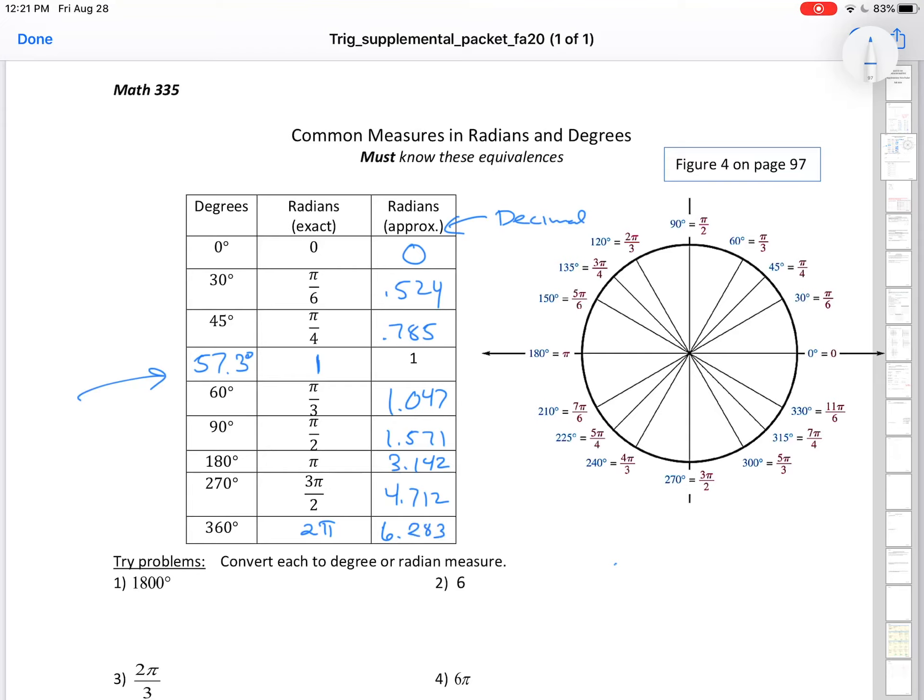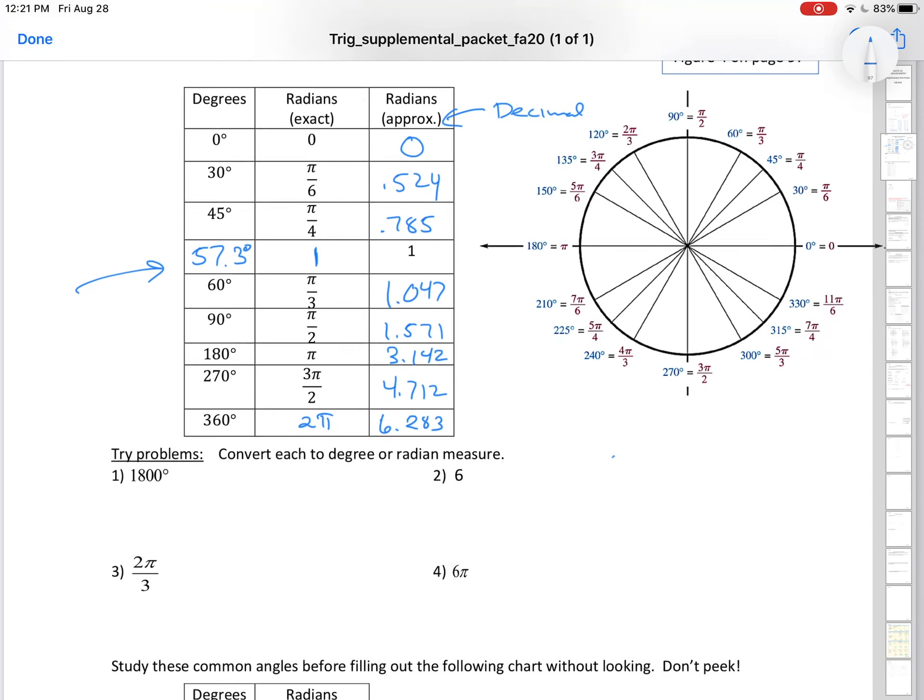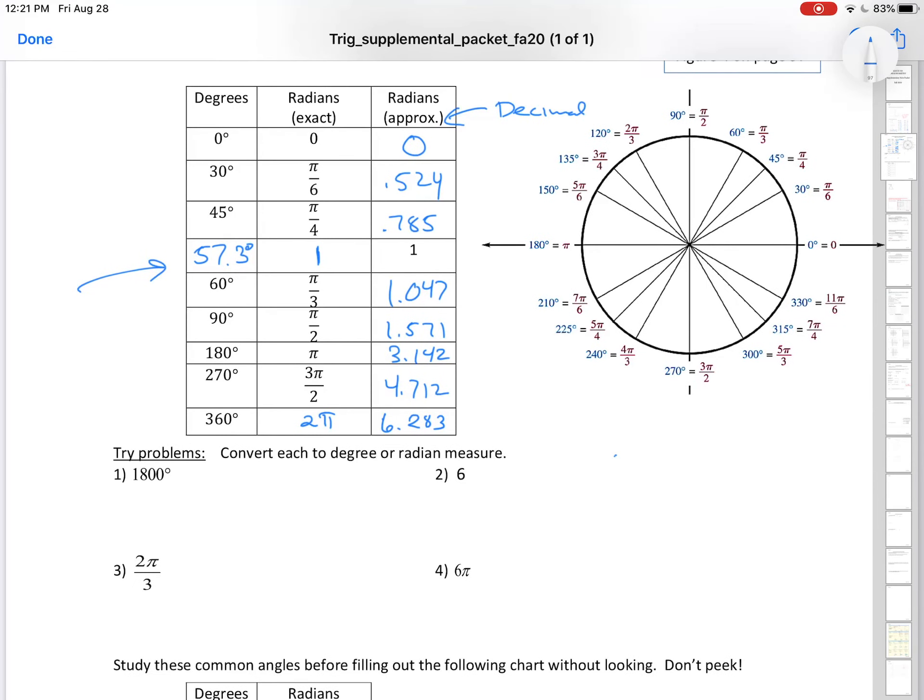The reason for this last column, where you give the radians approximate, is so that you realize radians are numbers, and therefore they don't have to have the π's. They usually do so that we can do the work easily, but they don't have to. Convert each degree to radian measure, 1800 degrees. I don't want degrees, so the 180 degrees goes on the bottom, and this is 10π.